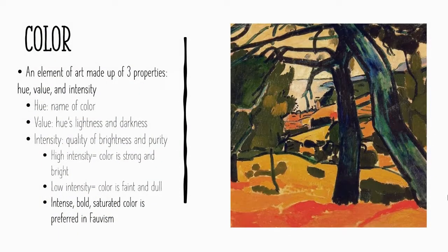Color is an element of art that can be seen in this art style. It's made up of hue, value, and intensity. In this case, we're looking at high intensity color that's strong and bright for this Fauvist style.